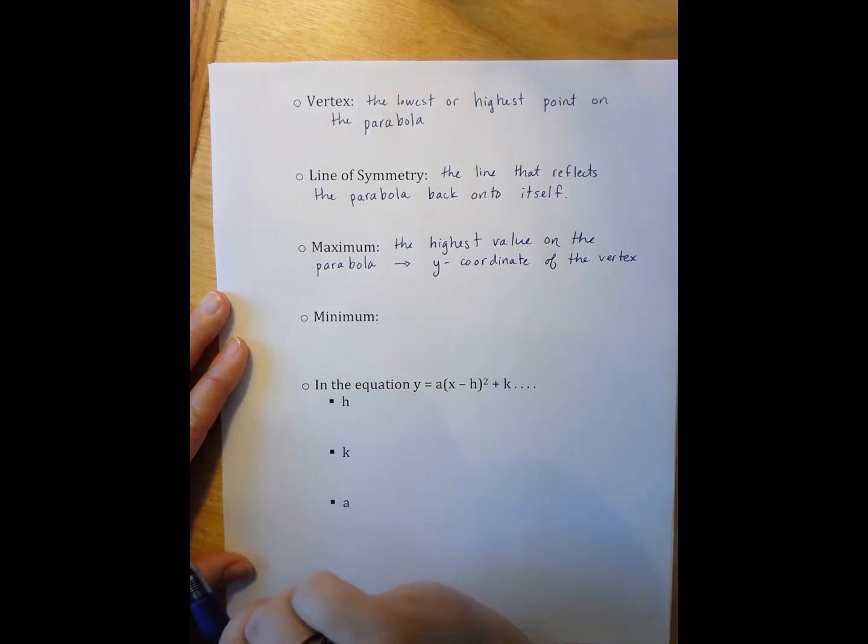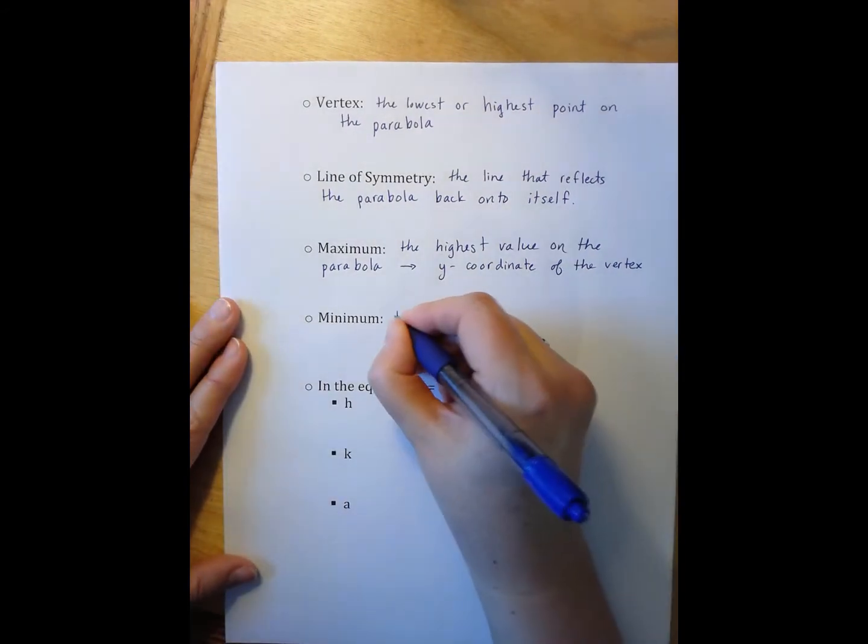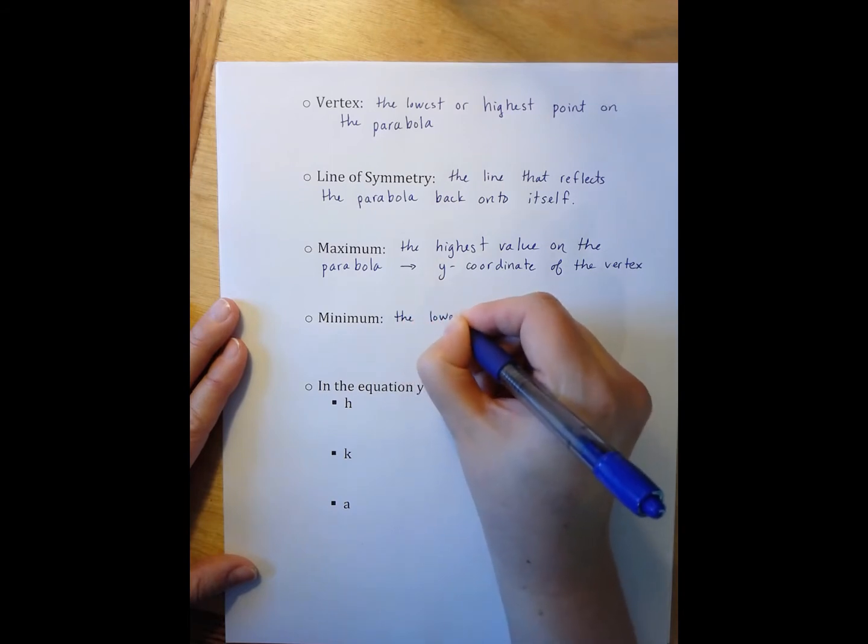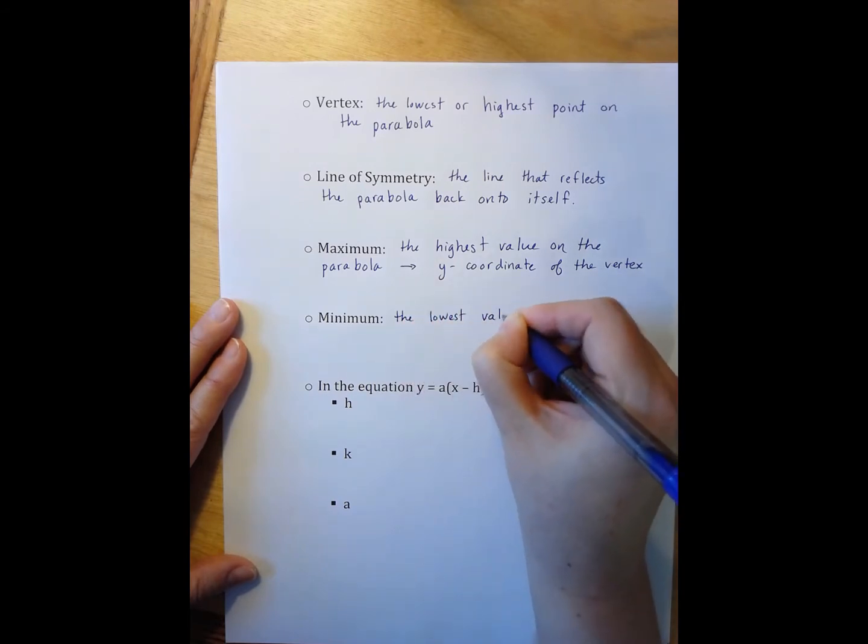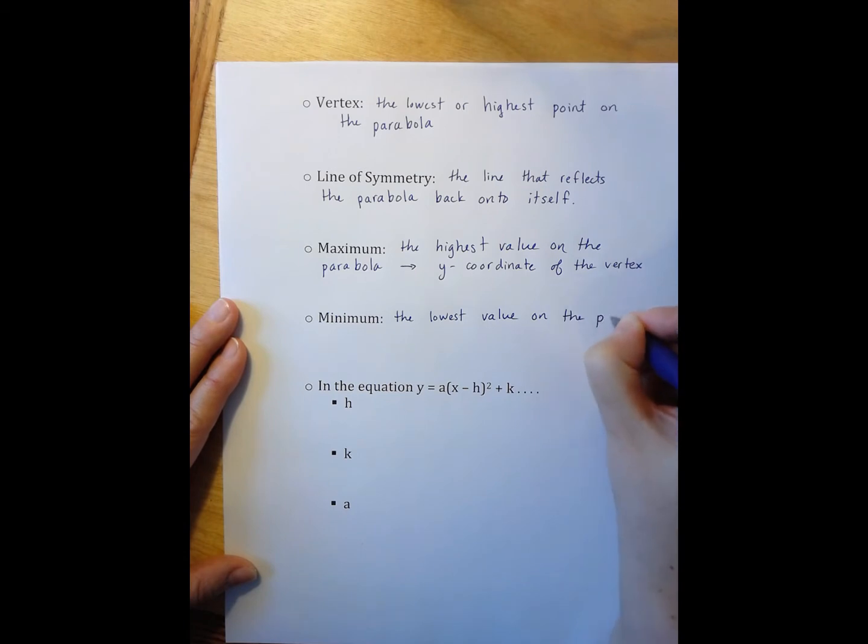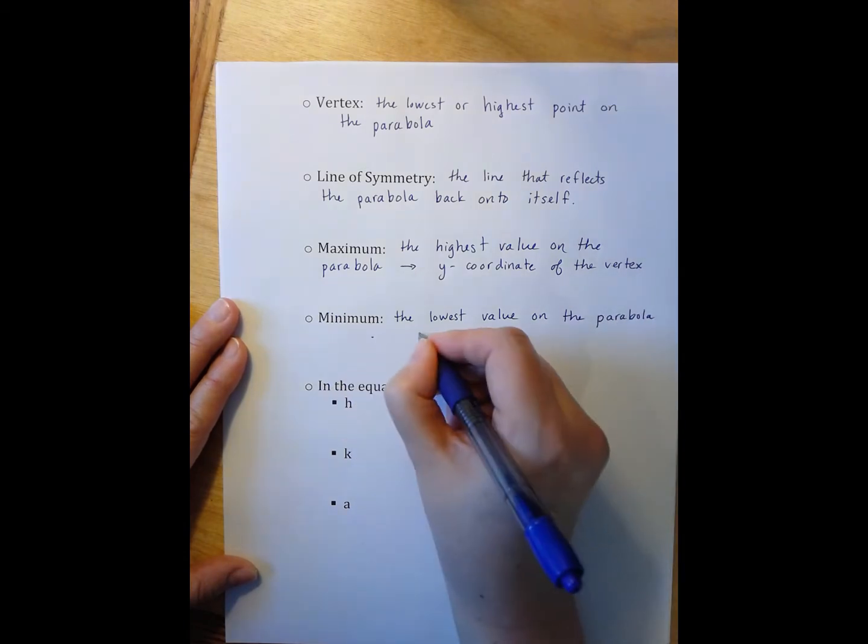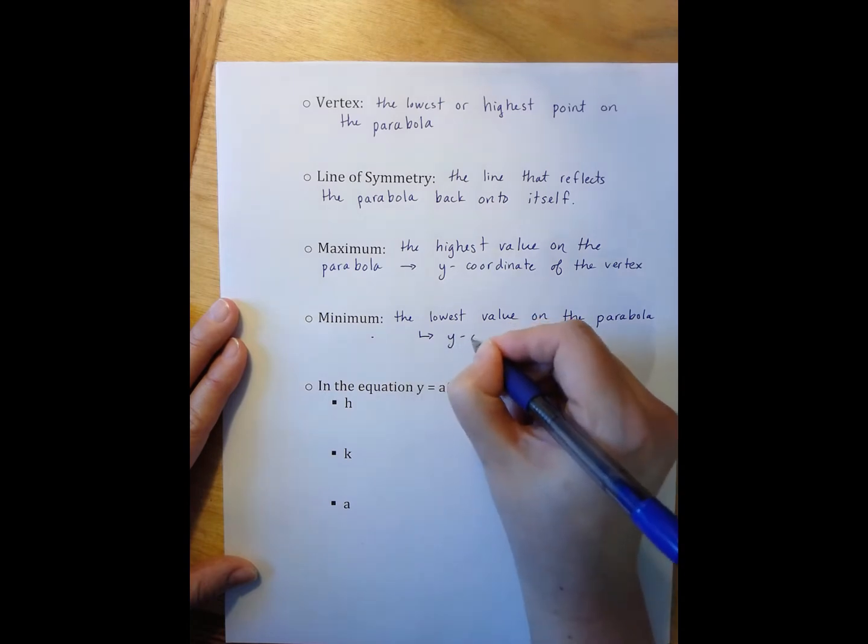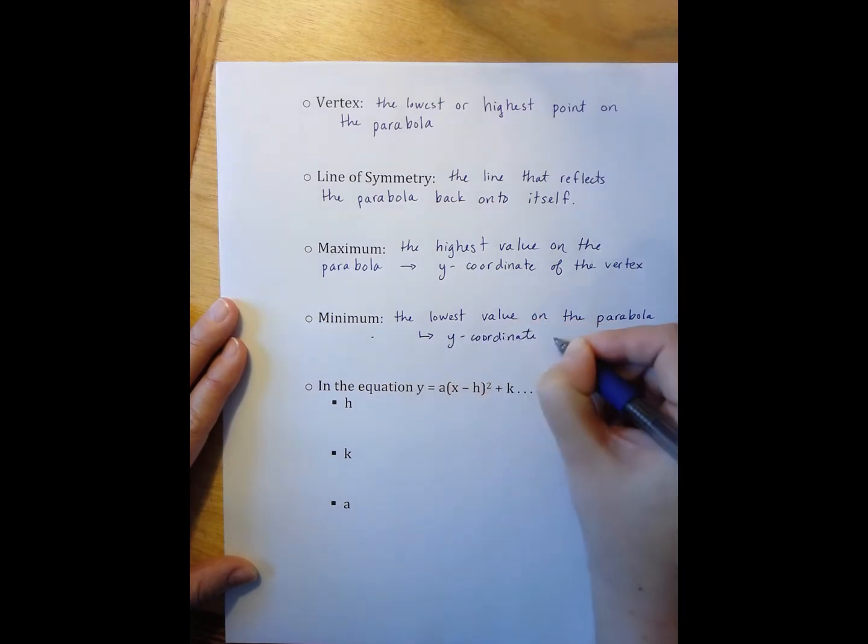Similarly, the minimum is also the y-coordinate of the vertex, but it occurs when it is the lowest value on the parabola. Again, meaning the y-coordinate of the vertex.